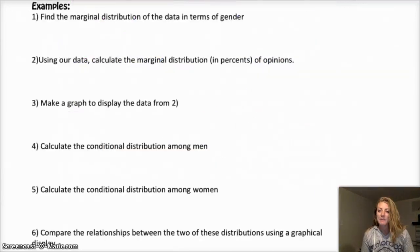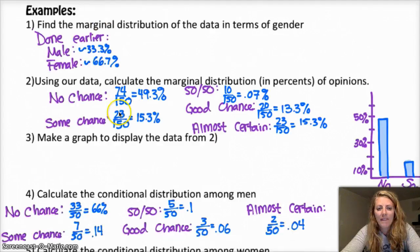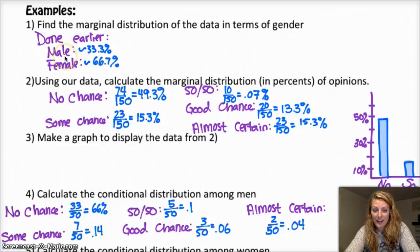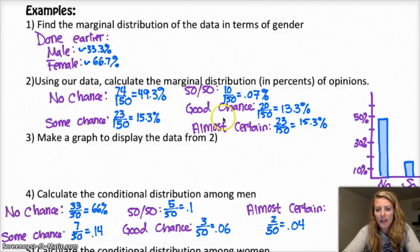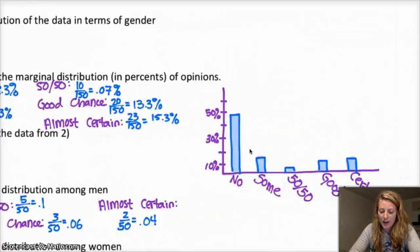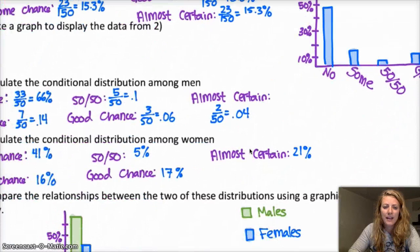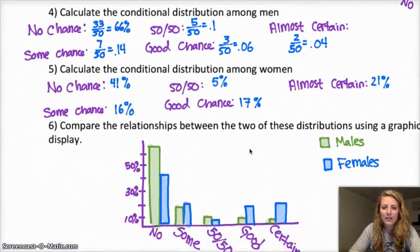Okay, here are the examples. Give them a try. I will give you the answers. I don't have a lot of time to explain them. But that's cool. You'll get them. It's not that bad. Okay, so number one we did earlier. So that's there. Two is a marginal distribution of opinions. So it's the total number who had that opinion over the total total. And then I have a graphical display there. And then here are the answers for the rest of it.